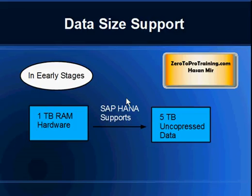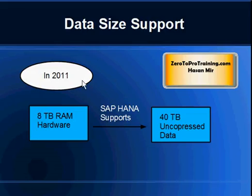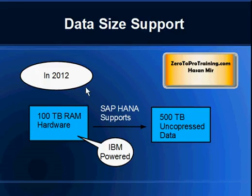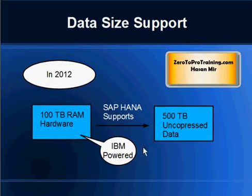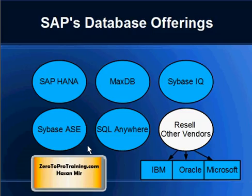In-memory databases keep all data in RAM so it's available immediately. In early stages, SAP HANA supported up to 1TB RAM, storing data in compressed format — so up to 5TB of uncompressed data fit in 1TB RAM, about 5 times compression. In 2011, SAP HANA supported up to 8TB RAM, handling 40TB of uncompressed data. In 2012, SAP HANA supported up to 100TB of RAM, available on IBM-powered devices.